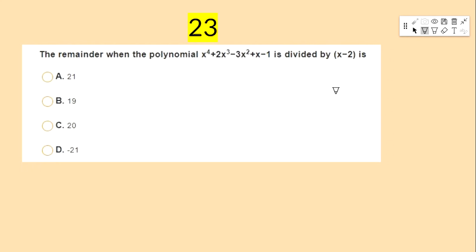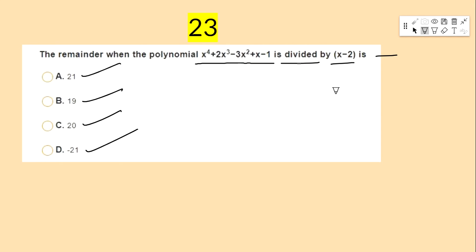The remainder when the polynomial x⁴ + 2x³ − 3x² + x − 1 is divided by x − 2 is — options: 21, 90, 20, −21.